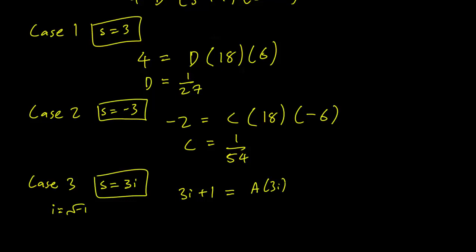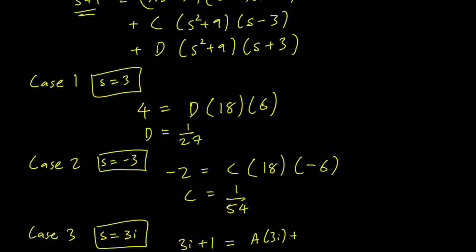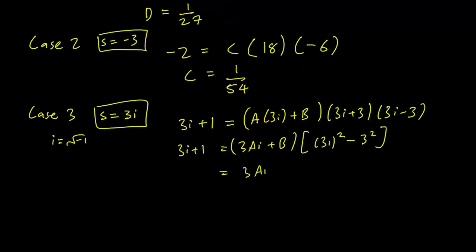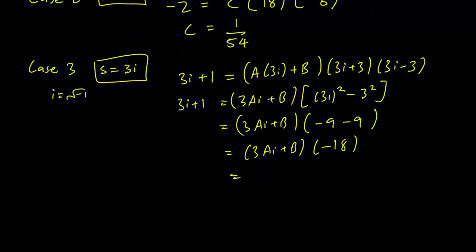So we have A 3i plus B times 3i plus 3 times 3i minus 3. Simplifying this, we have 3i plus 1 on the left. We have 3Ai plus B on the right. And this term is the difference of squares. So 3i plus 3, 3i minus 3 is just going to be 3i squared minus 3 squared. So what we have on the right-hand side is just 3Ai plus B times minus 9, or 3Ai plus B times minus 18.